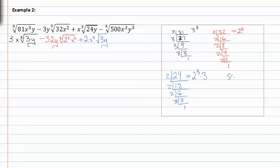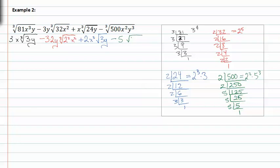Lastly we have five hundred: five hundred is divisible by two to get two fifty, divide by two again to get one twenty five, divisible by five to get twenty five, divisible by five to get five, divide by five to get one. So the prime factors are two squared times five cubed. We end up with five times the cubed root of two squared, and five y because of the y cubed and x squared. We now match up our radicals to find our like terms.